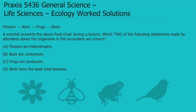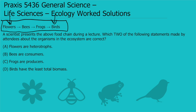Let's go through this first question together. It reads: a scientist presents the above food chain during a lecture. Which two of the following statements made by attendees about the organisms in this ecosystem are correct? We know that flowers are at the bottom of our food chain and birds are at the top. Let's read through our answer choices and determine the best two answers.